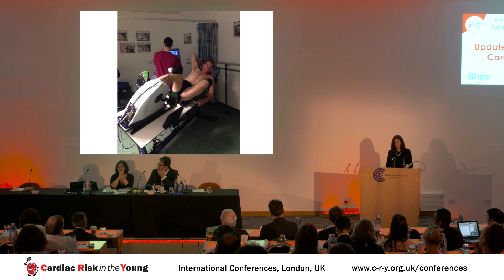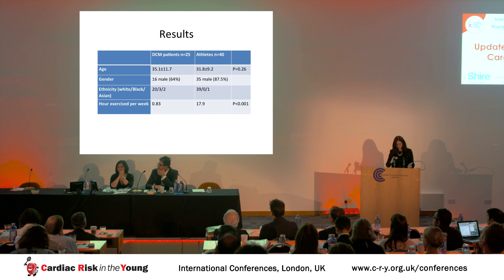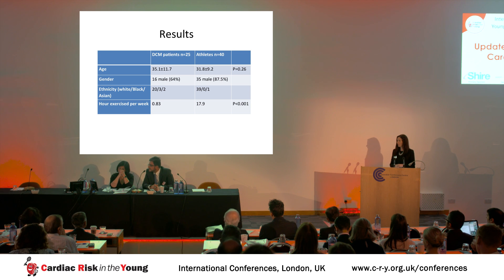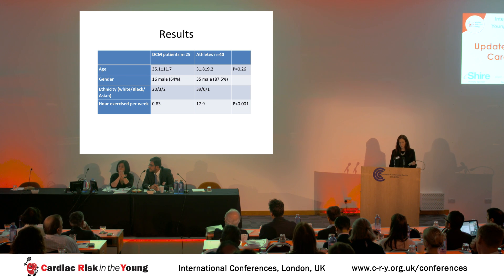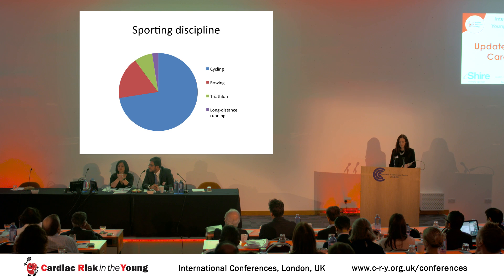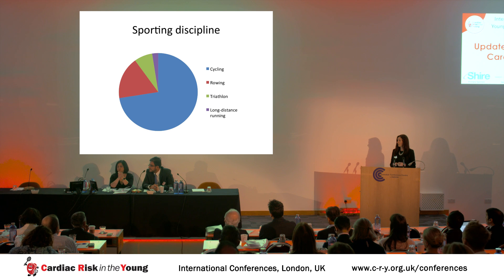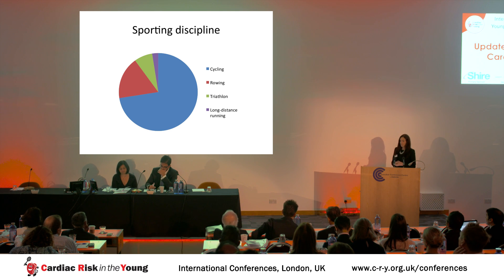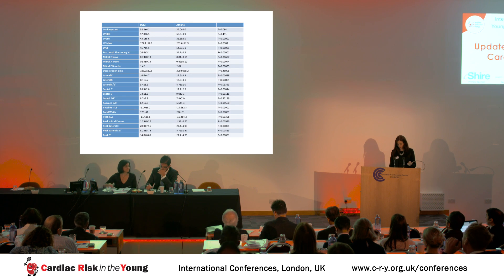Essentially there was an age-matched group, predominantly male and predominantly Caucasian. You can see clearly that the athletes exercised a lot more than the DCM cohort. They were all in the Mitchell classification with the highest level of endurance athletic activity — we had predominantly cyclists and some rowers, and 20 members of a UCI cycle club as well.